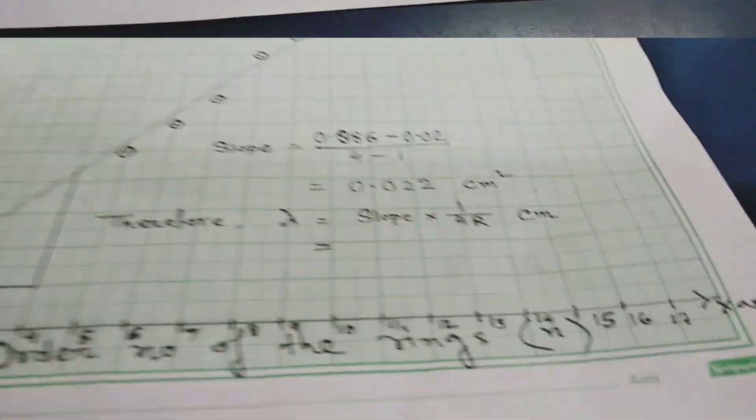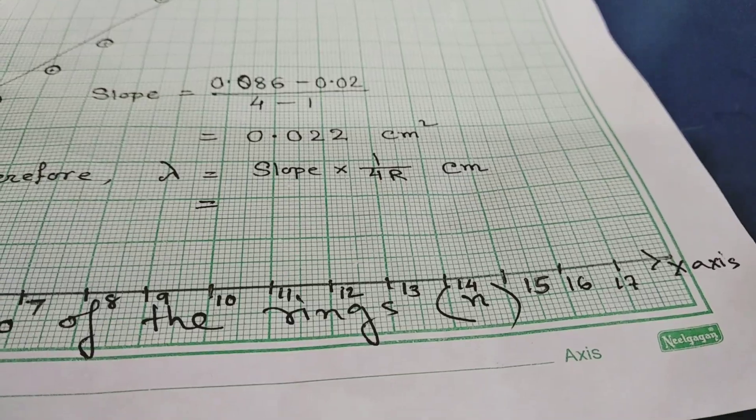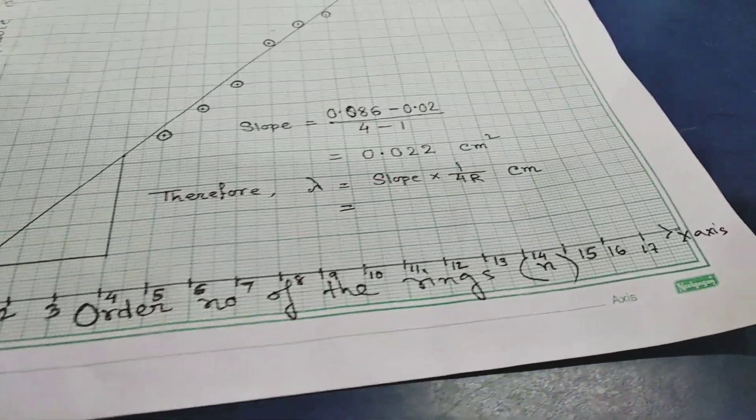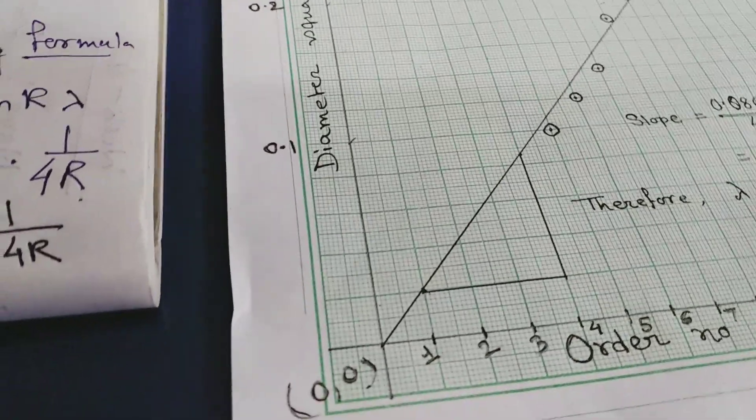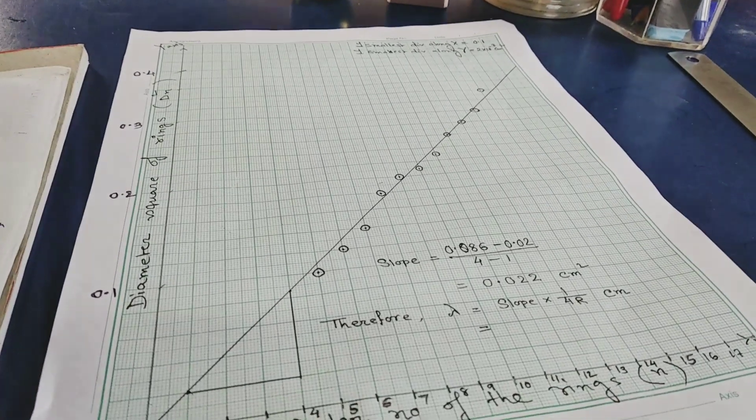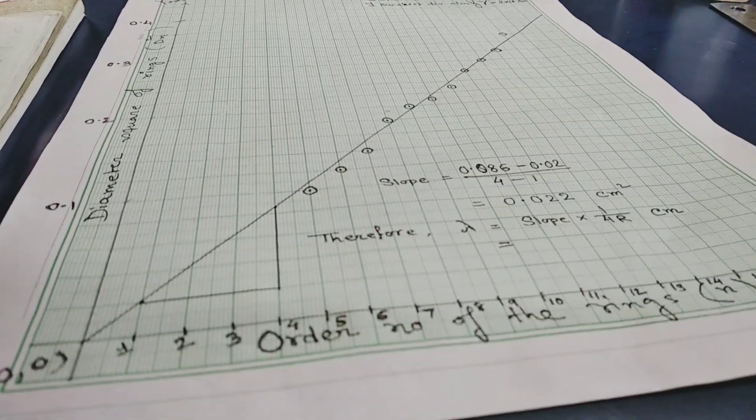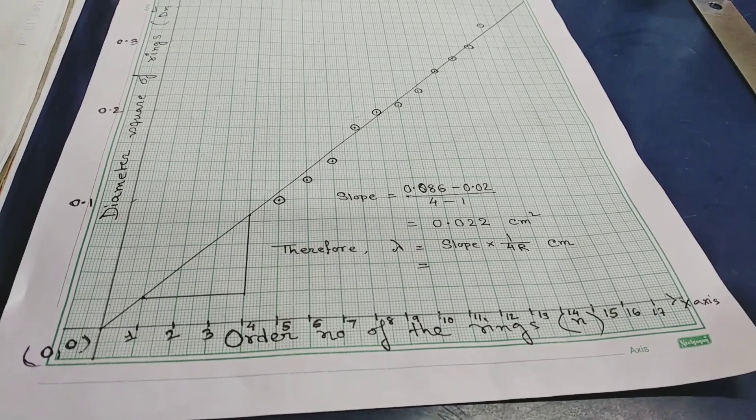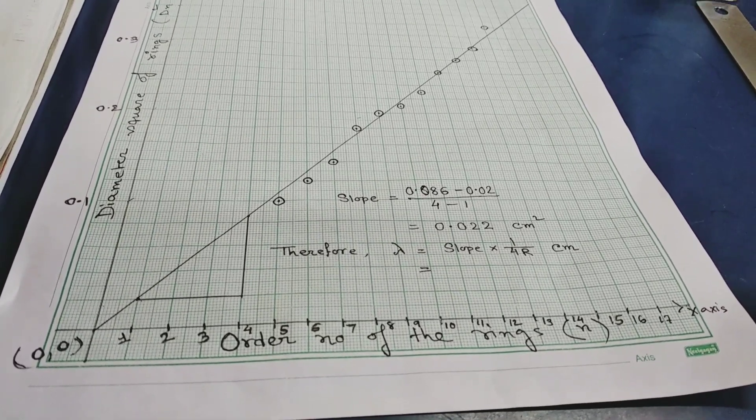This is the graph. Along x-axis, we need to plot the order number 0 to 15. And along y-axis, we need to plot diameter square of the rings. And the graph will look like this. It will be a straight line passing through origin.